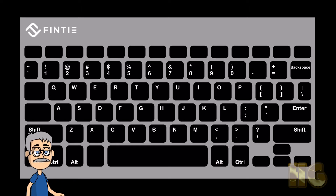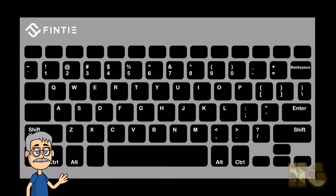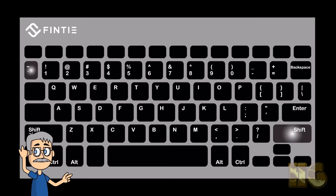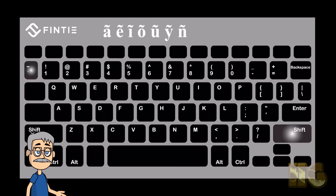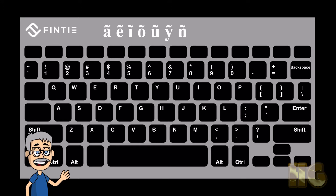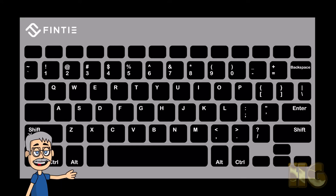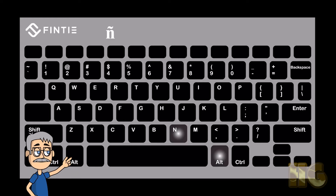You will find the tilde accent by using the SHIFT and tilde together — that is these two keys — followed by the accented letter. All vowels can accept the tilde as well as the consonant N. Same rules apply as above. An alternate for the tilde N is to use the right ALT key with the letter N.